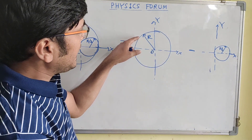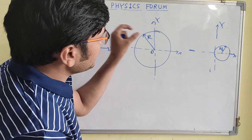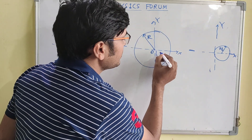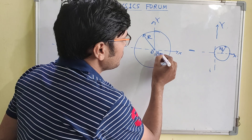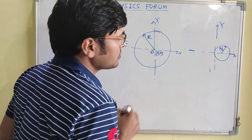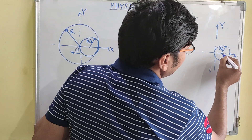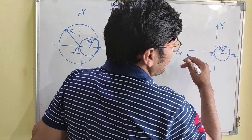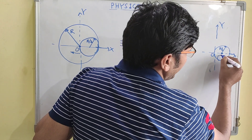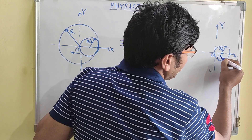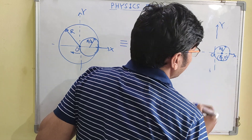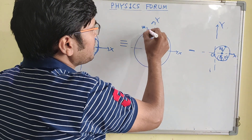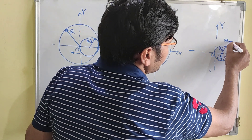As this is a complete disk, its center of mass would be lying at its geometrical center. So its coordinate would be (0, 0). And the coordinate of the disk which has been taken out from it would be (r/2, 0). We call it mass m1 and we call it mass m2.